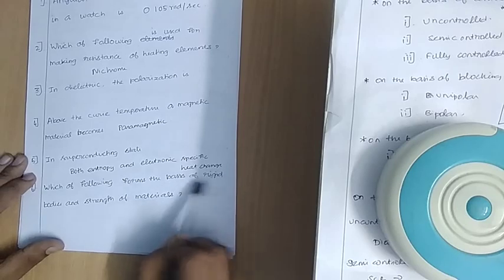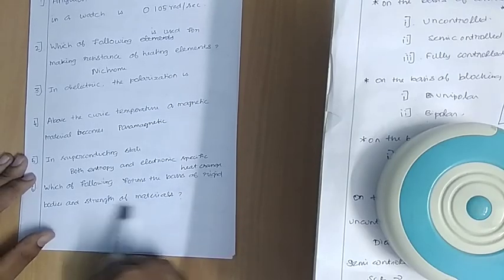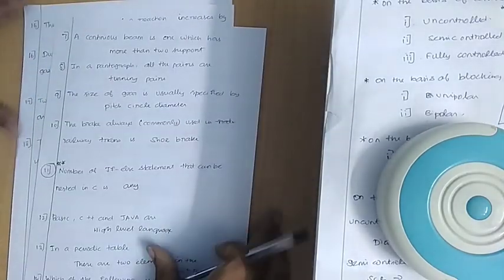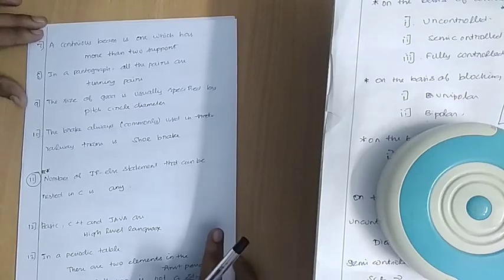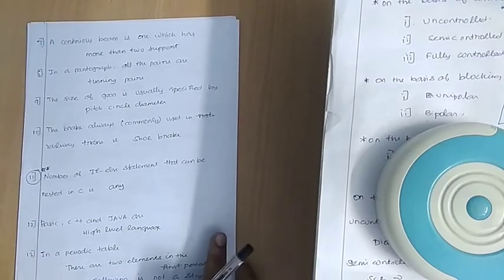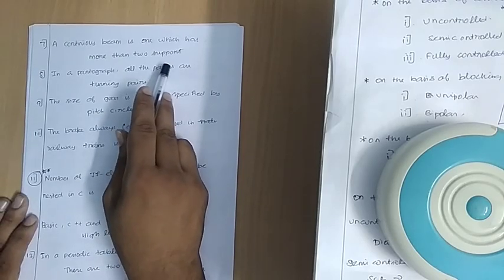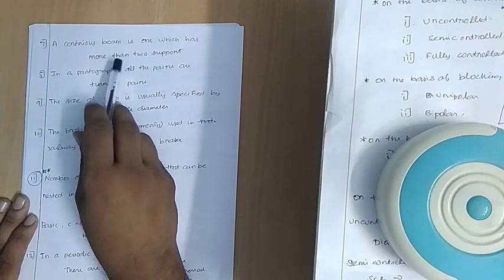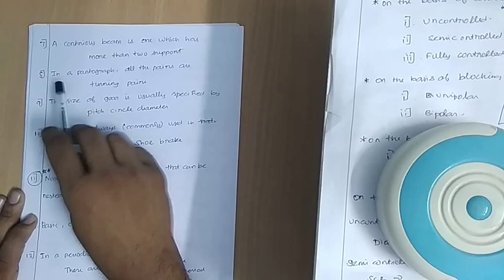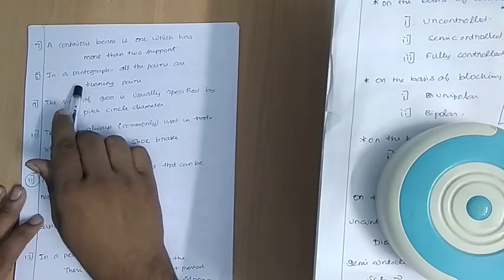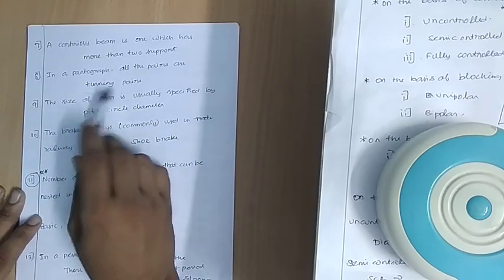Which of the following forms the basis of strength of materials? A continuous beam is one which has more than two supports. A single beam is one which has more than two supports.